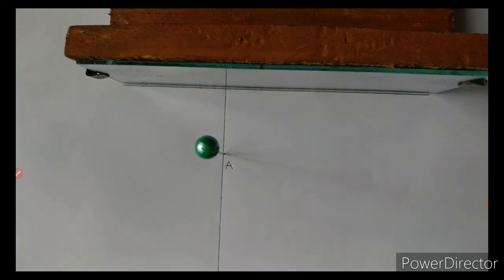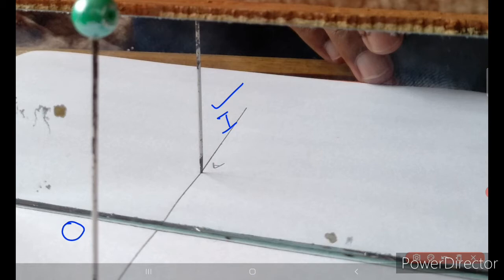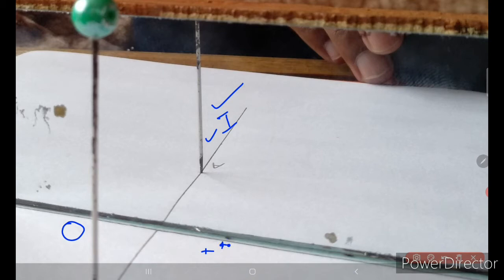Let this point be represented by A. If I rotate the position of the camera, you can see the image formed of this object — here is the image and here is the object. The next step will be like our previous experiment: I shall block the image by using two needles placed on the white paper, such that one needle somewhere around here will block this image, and using another needle I will put it somewhere around here so that it also blocks the image of this object.